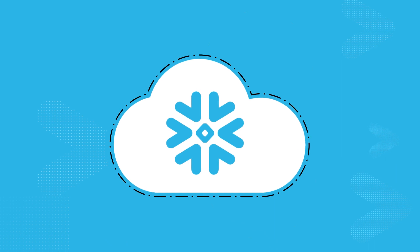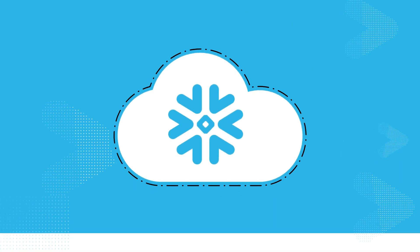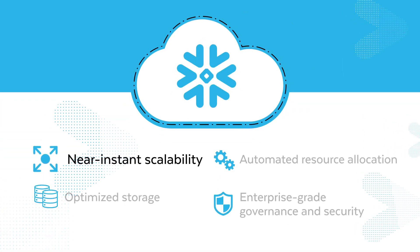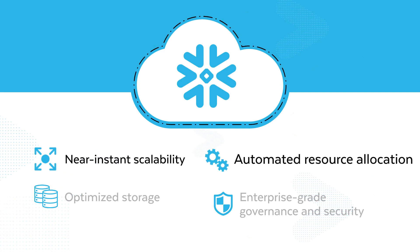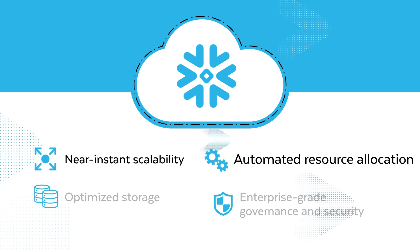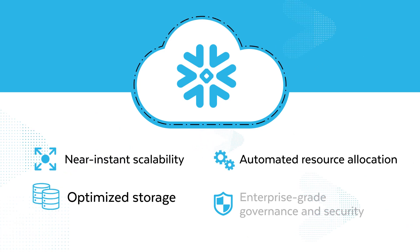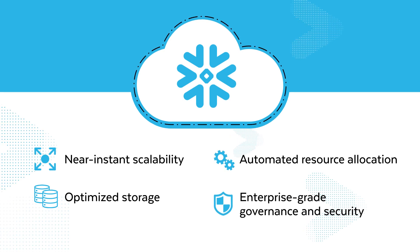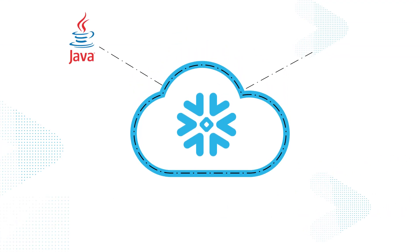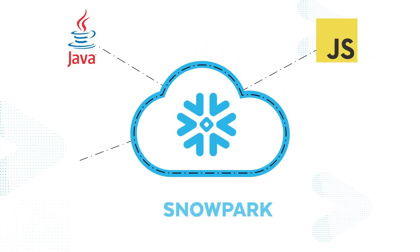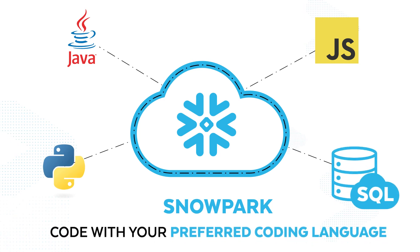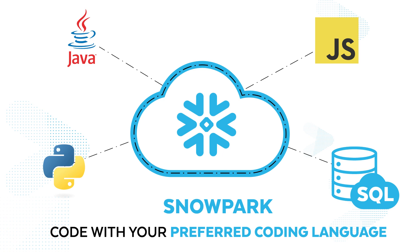Powered by our elastic performance engine, the data cloud enables data pipelines with near-instant scalability, automated resource allocation, optimized storage, and enterprise-grade governance and security. All with language flexibility provided by Snowpark, so that developers can code with their preferred languages and execute natively, right in the Snowflake platform.